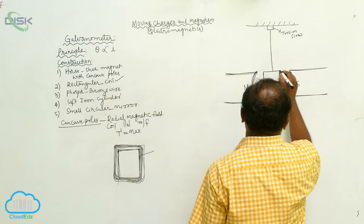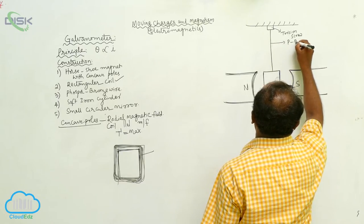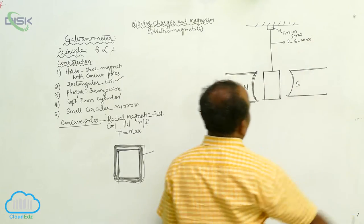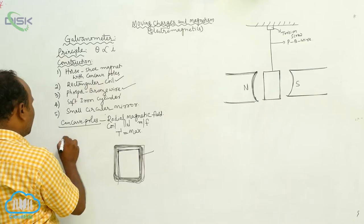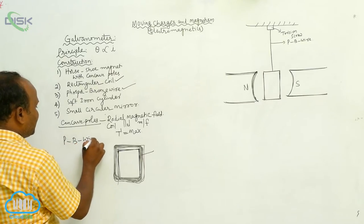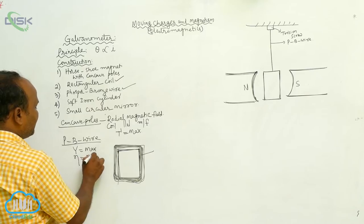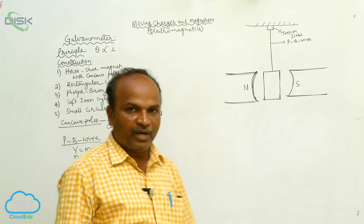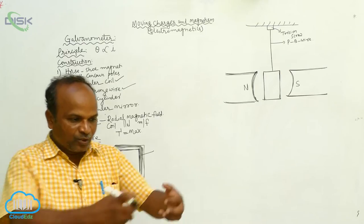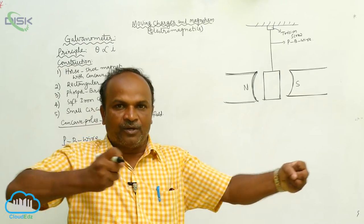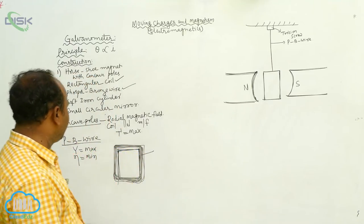This is the rectangular coil, and the suspension wire used is called phosphor bronze wire. We use phosphor bronze wire because its Young's modulus is maximum and rigidity modulus is minimum. Because of these qualities, as you apply any force, it is not going to break — it is elongated but it will not break.